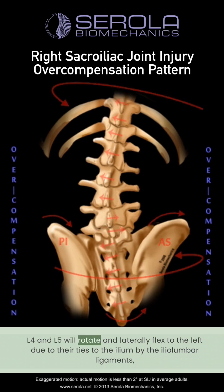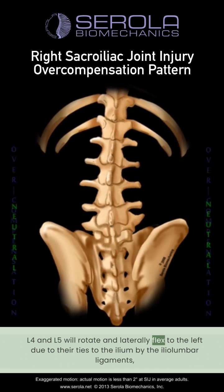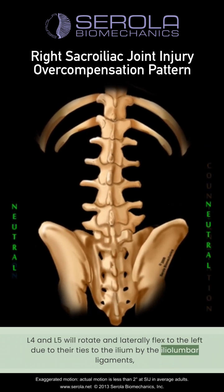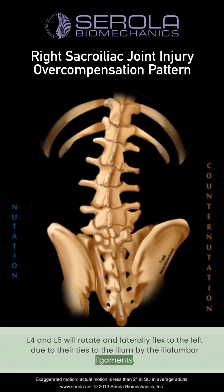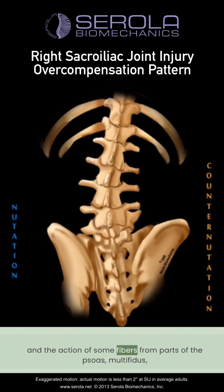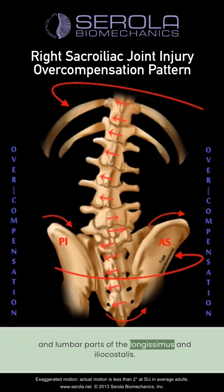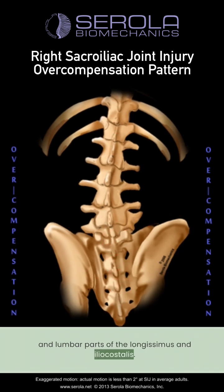L4 and L5 will rotate and laterally flex to the left due to their ties to the ilium by the iliolumbar ligaments and the action of some fibers from parts of the psoas, multifidus, and lumbar parts of the longissimus and iliacostalis.